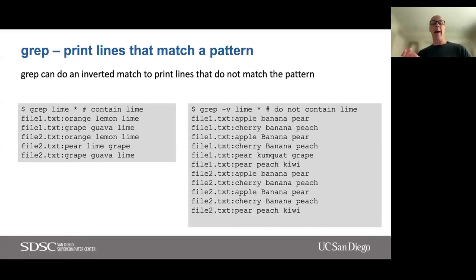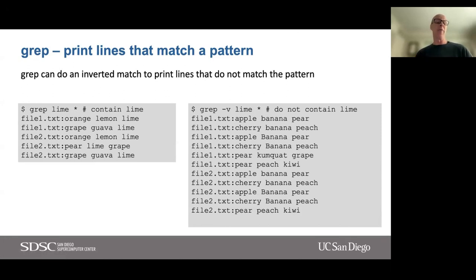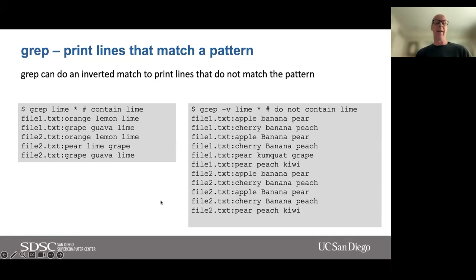Grep can also do an inverted match to print lines that do not match a pattern. We can do `grep line *` to find all lines from all files in this directory that contain 'line' — we see two occurrences in file one and three in file two. We could also do `grep -v line` to see all files that do not contain 'line', giving us all those lines from file one and file two not containing 'line'.